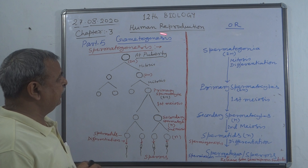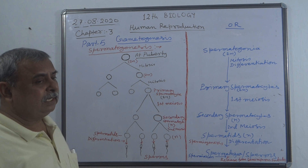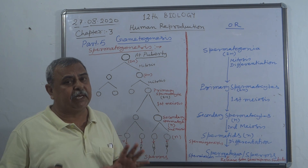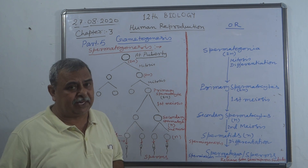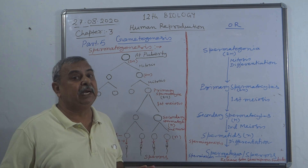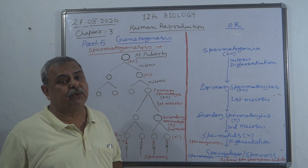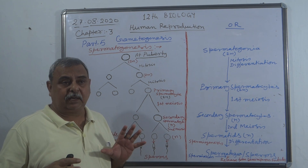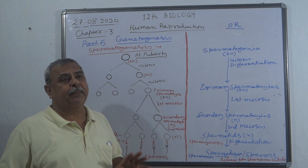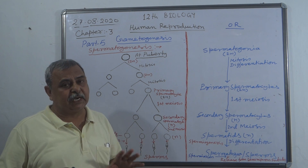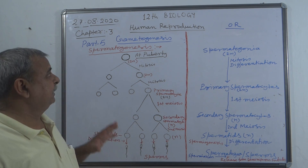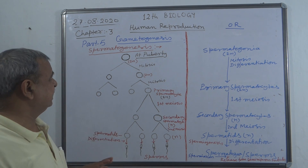What is gametogenesis? The process of formation of male and female gametes in the body of male and female individuals, or in their sex organs — the testes and ovaries — is known as gametogenesis.